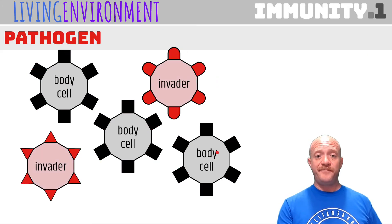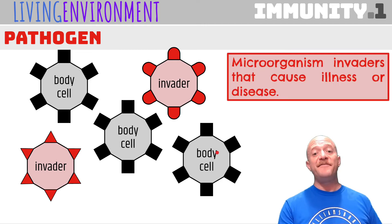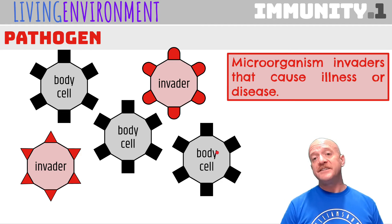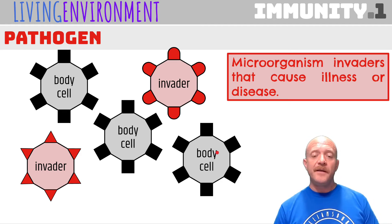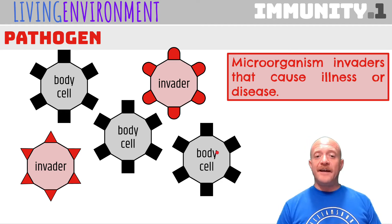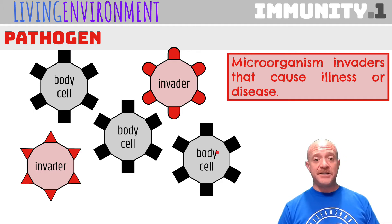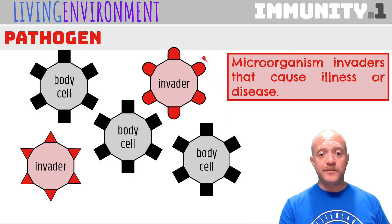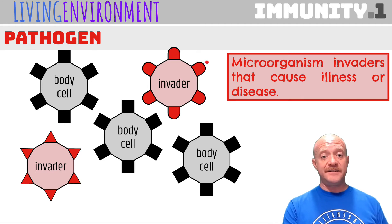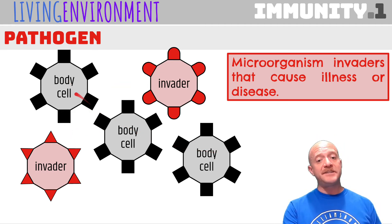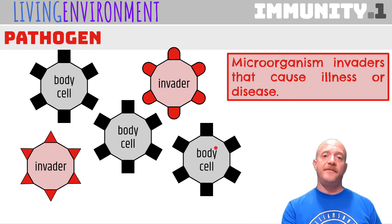A pathogen is something that is an invader — in particular, it's a microorganism invader that is causing illness or disease. We recognize the pathogens because they have a different antigen. One of these antigens is a round or circular shape, another is a triangular shape — it doesn't match the rectangular or square shape of the body cells.